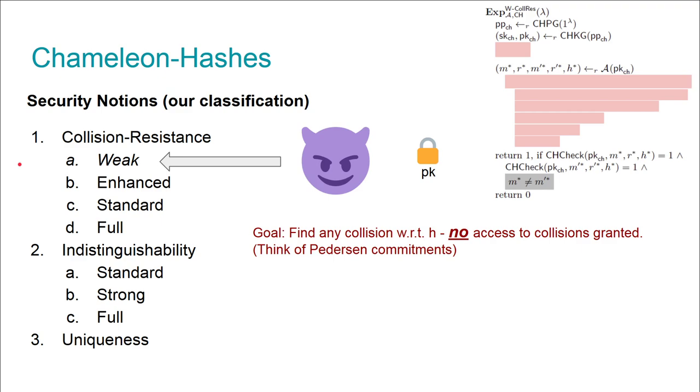First I want to introduce weak collision resistance, which is our wording because this definition comes from the very first paper by Krawczyk and Rabin at NDSS 2000. The idea is that the adversary gets access to a public key, which is honestly generated, and needs to output a collision: two distinct messages but still verifying for the same fingerprint.